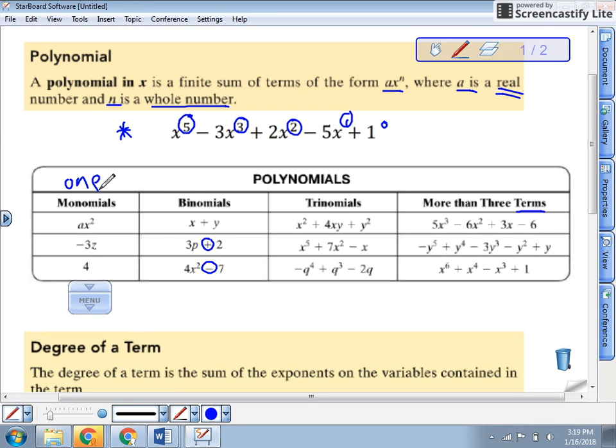Binomial, two terms. One, two. Trinomial, three terms. You guys can see the three terms. And then if they have more than three terms, we don't really have a special name. We just kind of call it a polynomial. So one, two, and three.